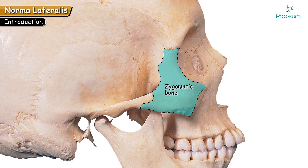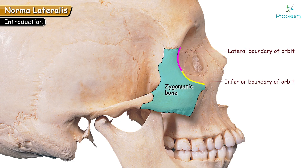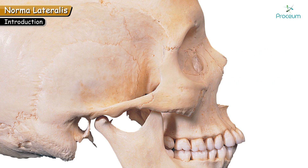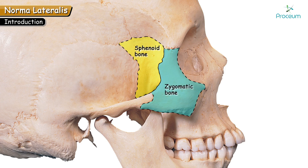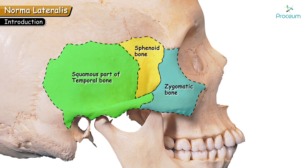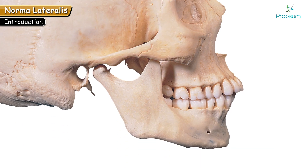The zygomatic bone forms the inferior and lateral boundary of the orbit. There is also a bone called the greater wing of sphenoid, which is present between the zygomatic bone anteriorly and the squamous part of the temporal bone posteriorly. We can also appreciate the lateral surface of the mandible in this view.